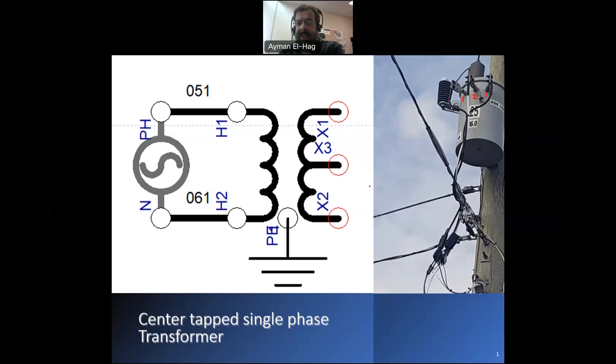This is a schematic diagram for this type of transformer. Again you have the high voltage side at the primary and then this is the low voltage side. You will have one, two, and three bushings or three terminals. We call this type of transformer center tapped single phase transformer, and this is very common in North America, especially for residential load.